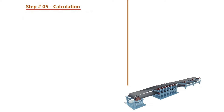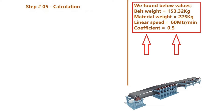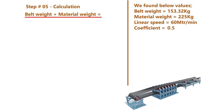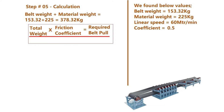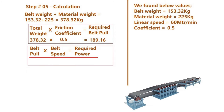In Step 5, we take all the data from the previous calculation steps. First, we add the belt conveyor weight plus the material weight to get the total weight on the conveyor. Then, using the formula: total weight multiplied by the friction coefficient gives us the required belt pull. Multiplying the belt pull by the belt speed gives us the required power.